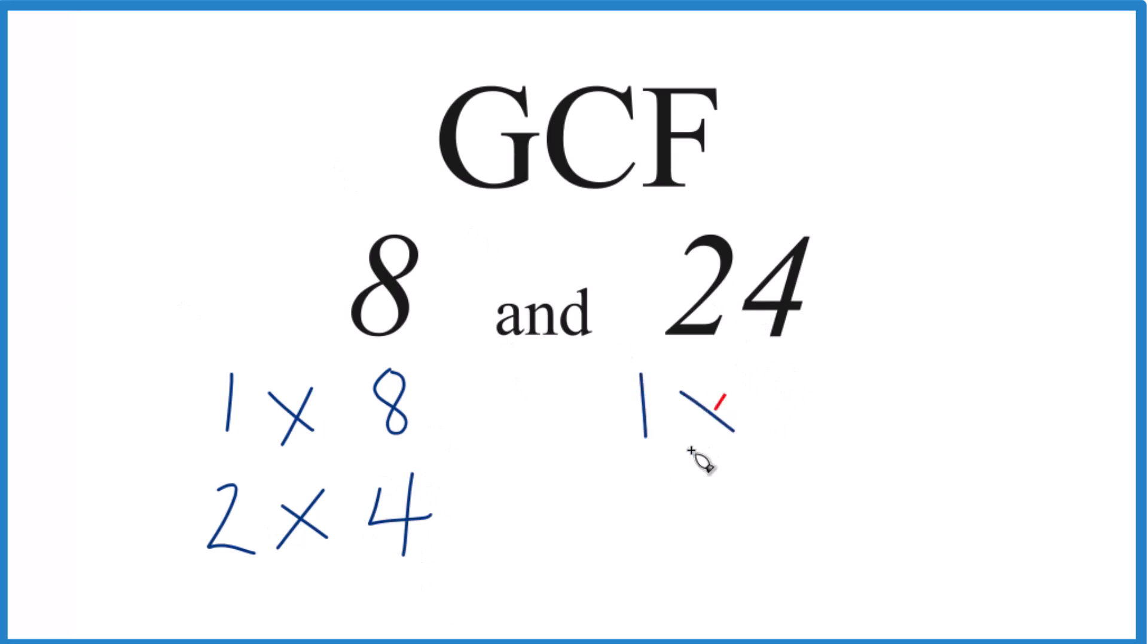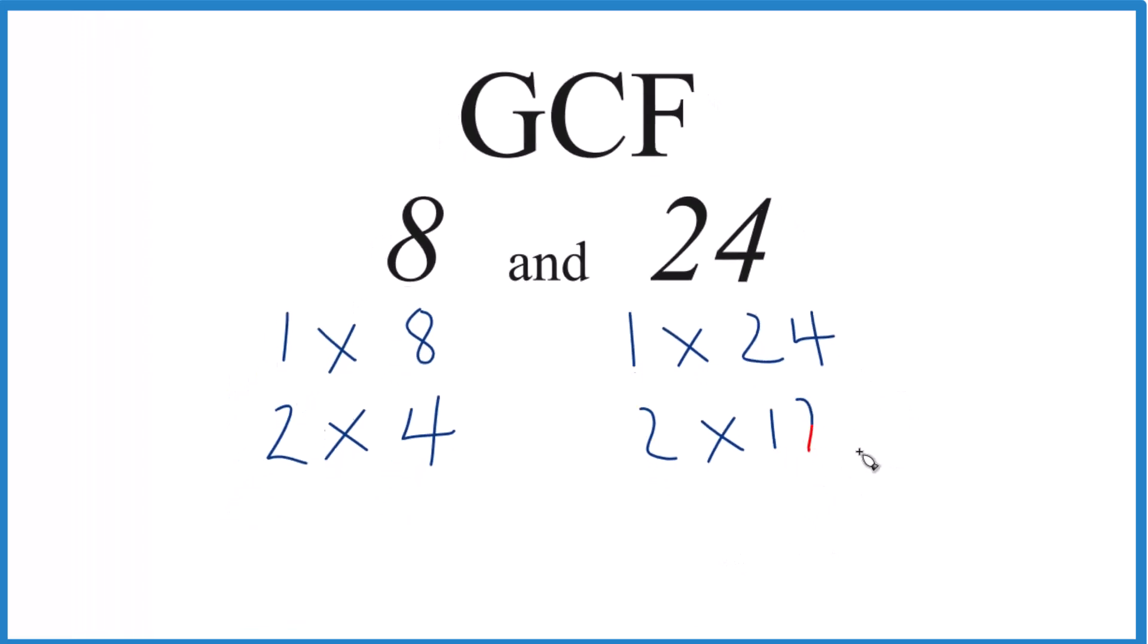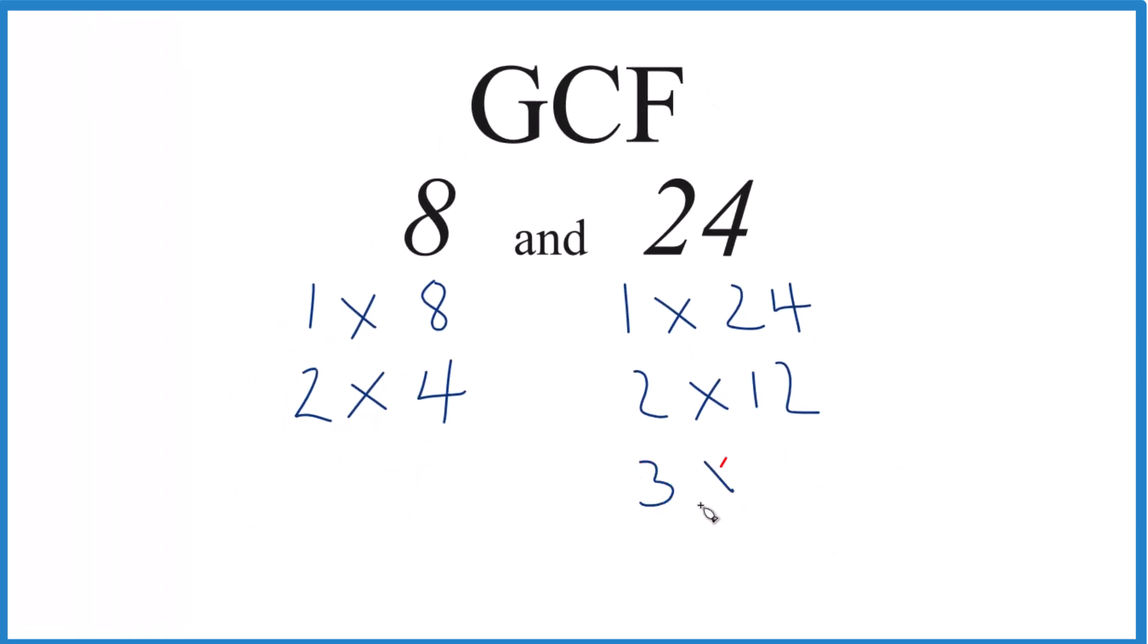24: 1 times 24, 2 times 12, 3 times 8, and 4 times 6. Those are the factors for 24. So we have our factors.